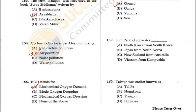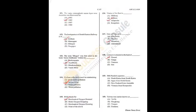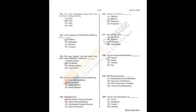Question 159: The 38th parallel separates North Korea and South Korea — A is the correct answer. Question 160: Taiwan was earlier known as Formosa — B is the answer. Q160 = D (answer given), Q159 = A.